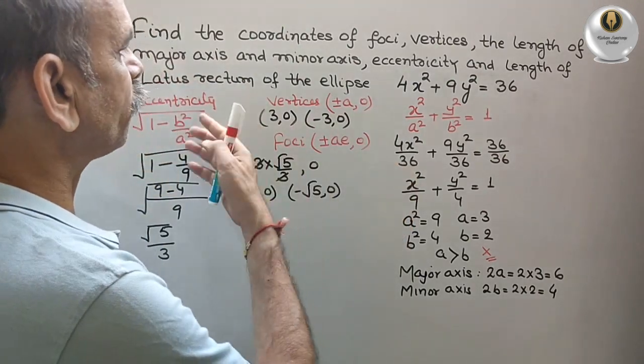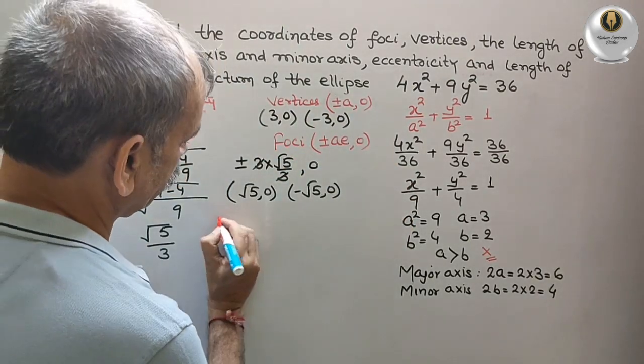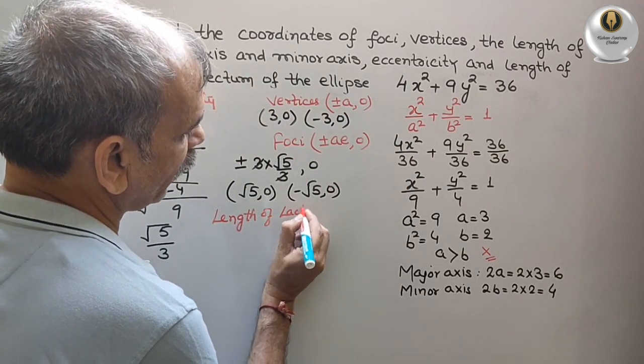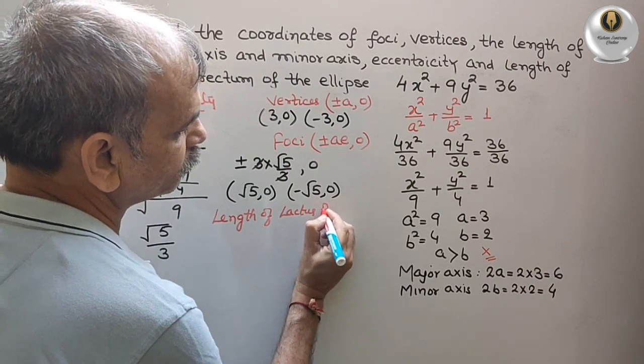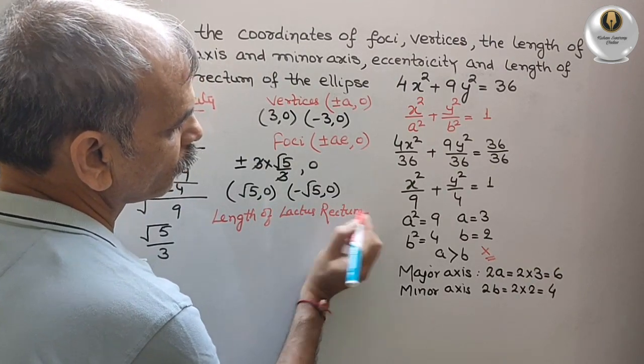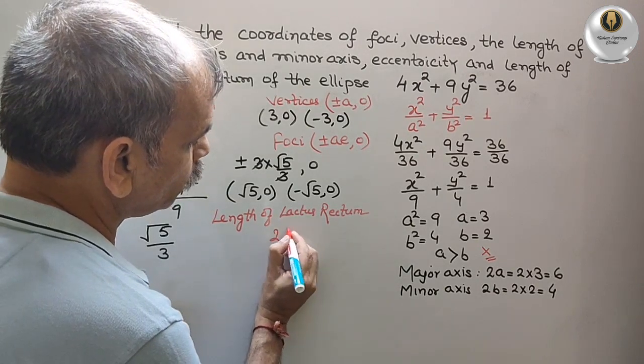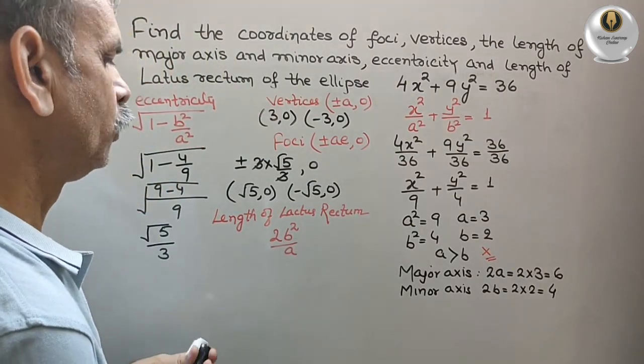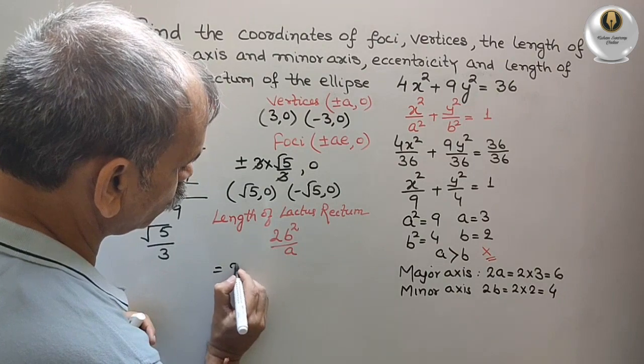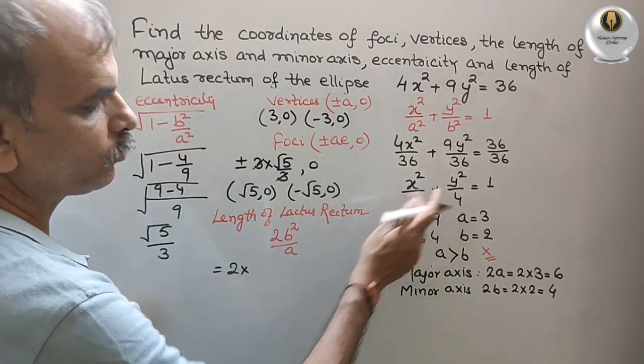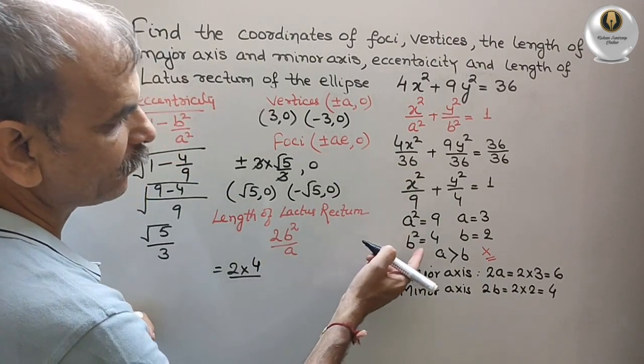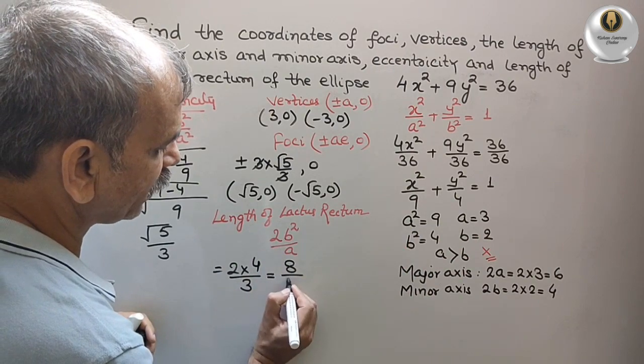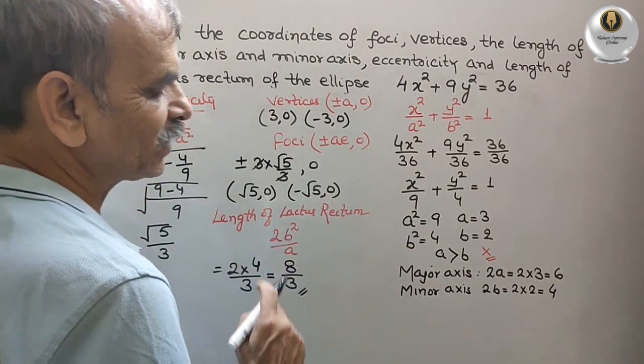Next is your length of latus rectum. Length of latus rectum, that is your 2b²/a. Same. So what we will get? We will get 2 into b². b² is 4, by a. a is 3. That is equal to, we can say, 8/3. So this is your length of latus rectum.